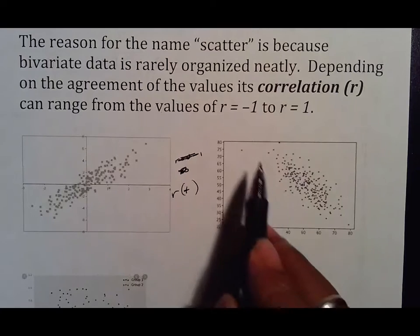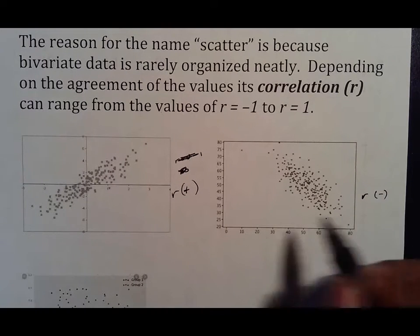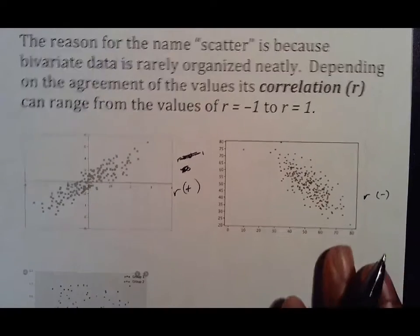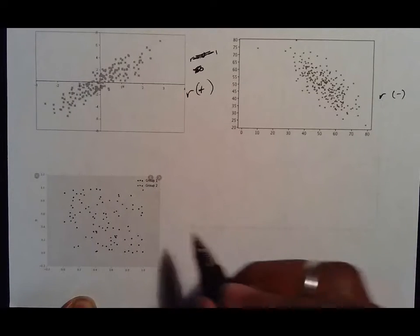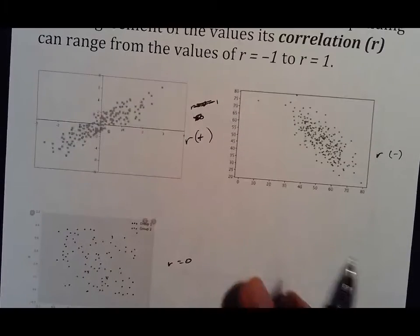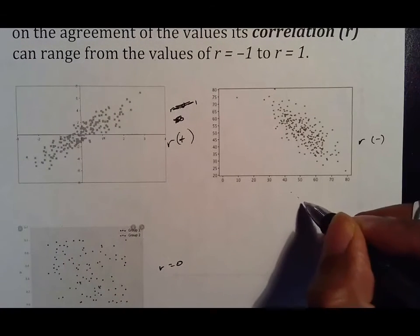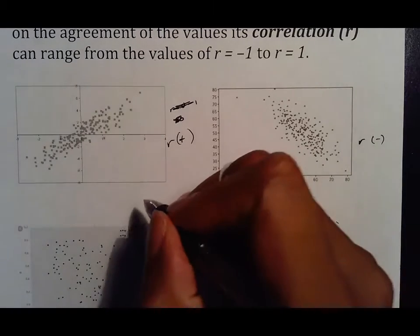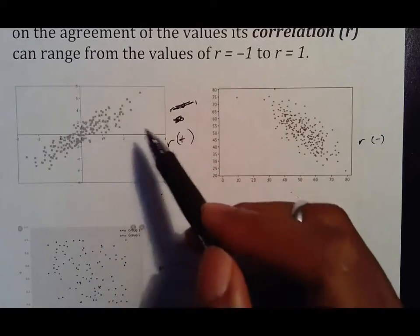In this case, you can see the dots kind of having a more negative slope, so your correlation or your r would be negative. This would be a positive correlation, this would be a negative correlation, and when you look at this, there's really no relationship between everything, so this would be r equals zero for no correlation whatsoever. Pretty much zero means that the information is really random, and the closer you get to one, the more organized they are.